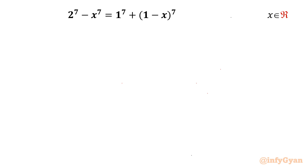Welcome back to Infigian friends. Today in this video we are going to take up one challenging equation. It is 2^7 minus x^7 equal to 1^7 plus (1 minus x)^7, and we have to find out all real solutions. I will be solving this question without using binomial expansion.